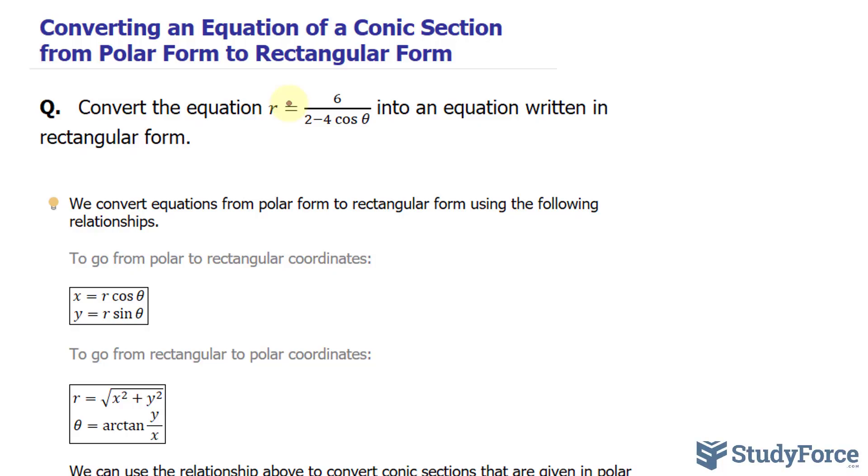Okay, let's go ahead and start converting. The first thing that I want to do with this equation is multiply both sides by the denominator. That way we do not have an equation with a fraction. If I multiply the right side and the left side by 2 minus 4 cosine theta,